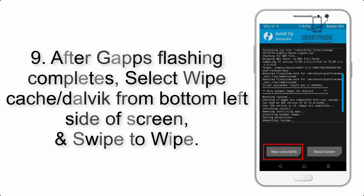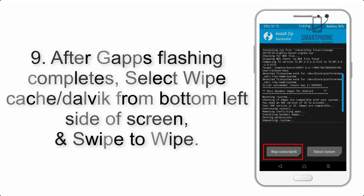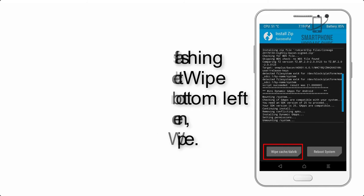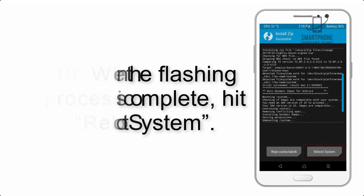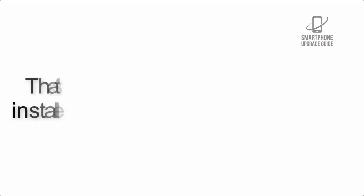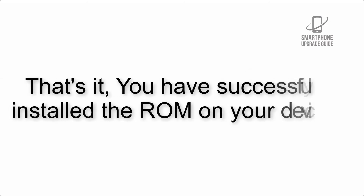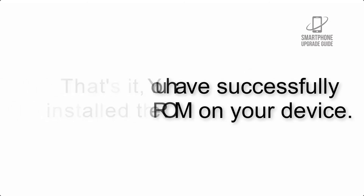Step 9: After GApps flashing completes, select Wipe Cache and Dalvik from the bottom left side of the screen and swipe to wipe. Step 10: When the flashing process is complete, hit Reboot System. That's it — you have successfully installed the ROM on your device.